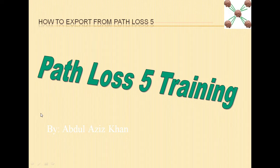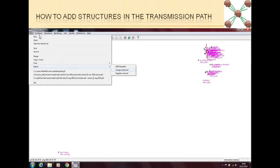So let's see how Pathloss does this export. Here is our network — if we go to Files and then Export, we have three options. The first option is to export as an ESRI shapefile, which is a well-known map data format that can be loaded into map tools. The last option is the old MapInfo export. The middle option is new — you can export your data as a Google Earth file.